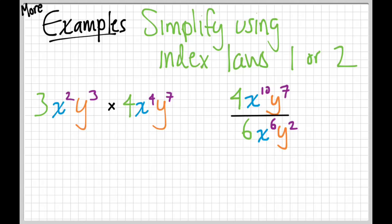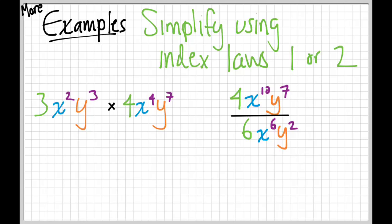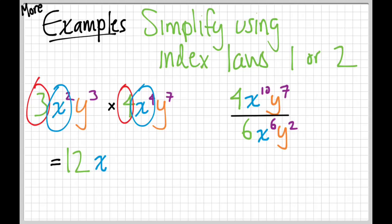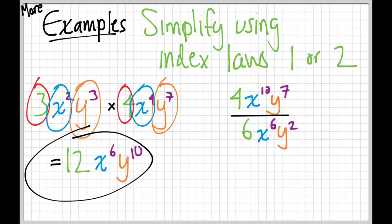More examples — simplify using index laws one or two. For the first one, when we multiply, we multiply like terms: numbers by numbers, and pronumerals by like pronumerals — x's times x's and y's times y's. So three times four is 12. Then x squared times x to the fourth gives us x to the sixth. And y cubed times y to the seventh gives us y to the tenth.